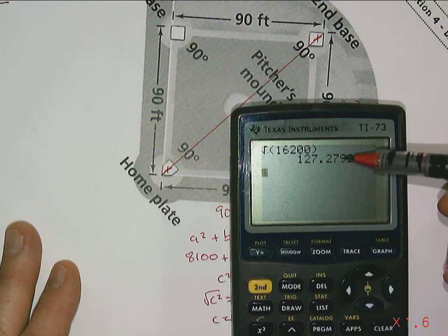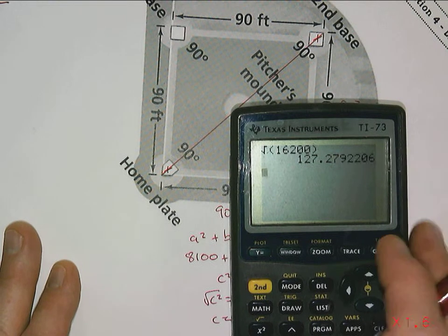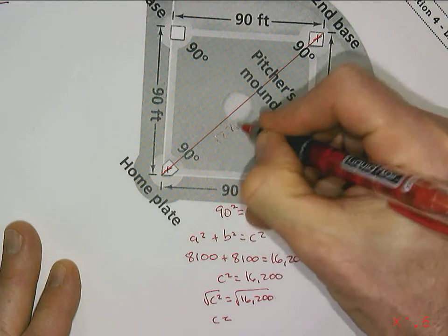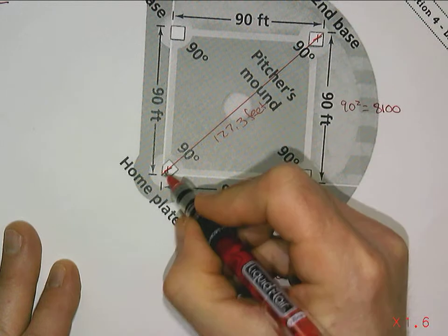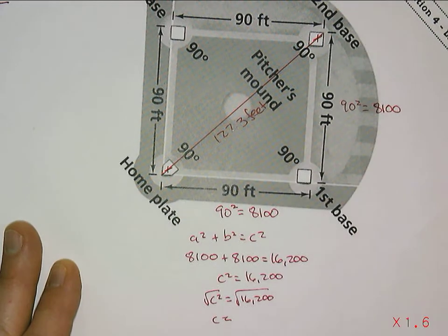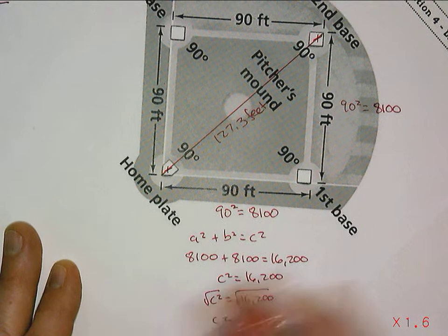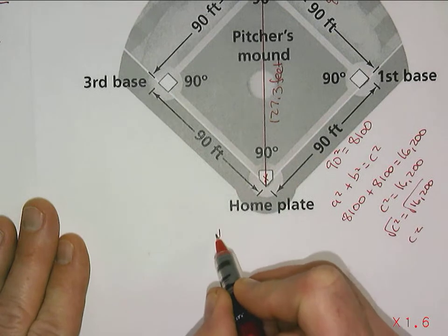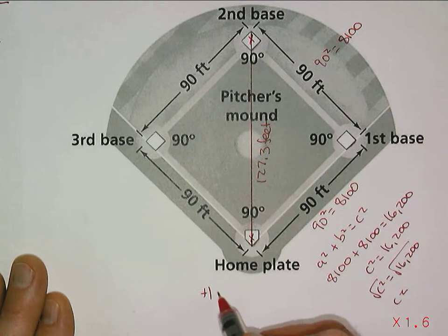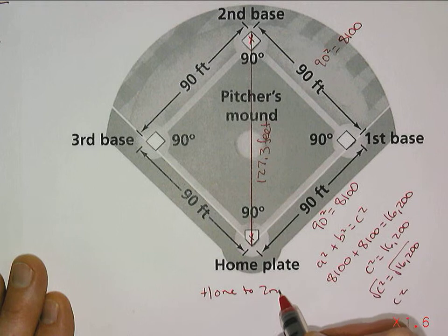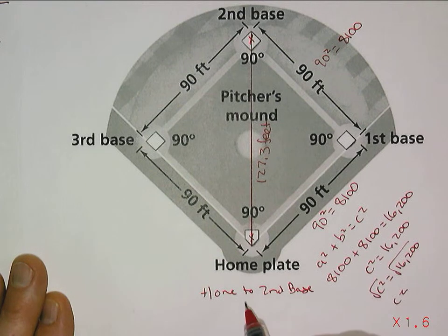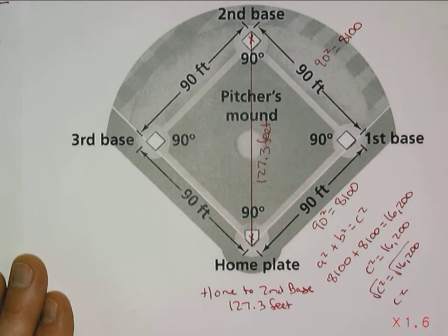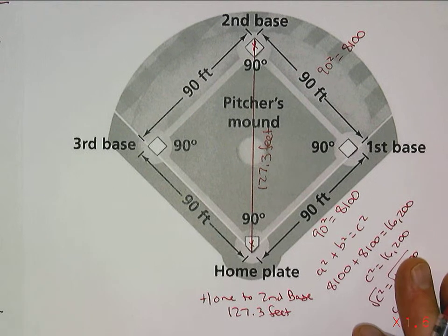So 127.3 feet is the distance from home plate to second base, and that's how far the throw would be if we were throwing from home plate to second base. So that's our first calculation: home plate to second base, 127.3 feet. Again, we're just using the Pythagorean theorem.